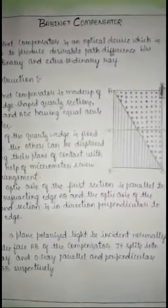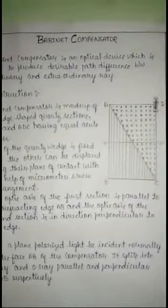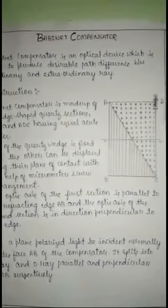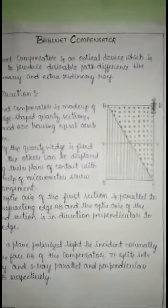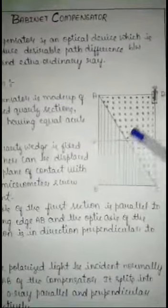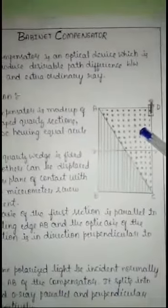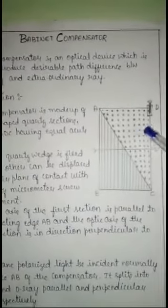Similarly, the ordinary ray becomes the extraordinary ray. Thus, the two rays exchange their velocities in passing from one section to the other section. The net effect of one section cancels the effect of the other.